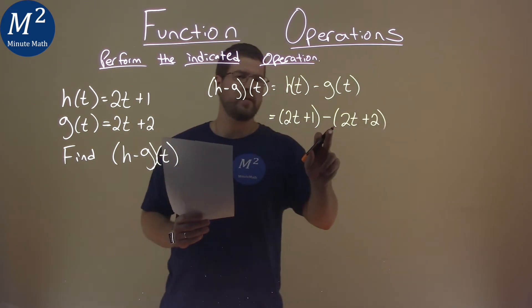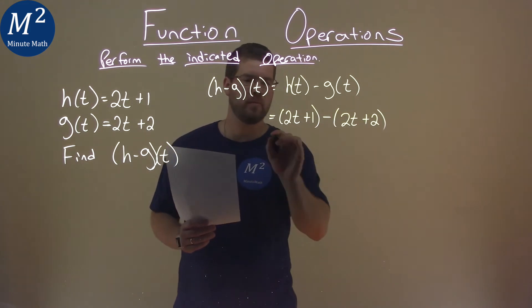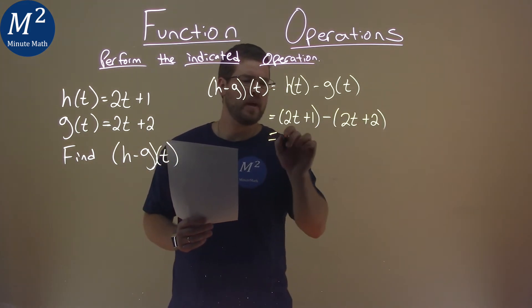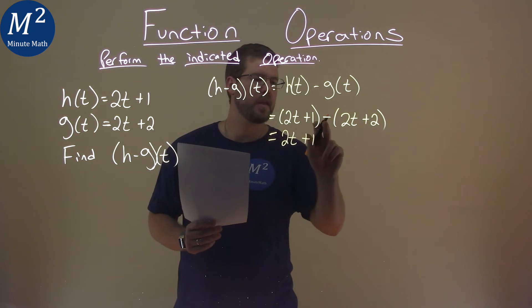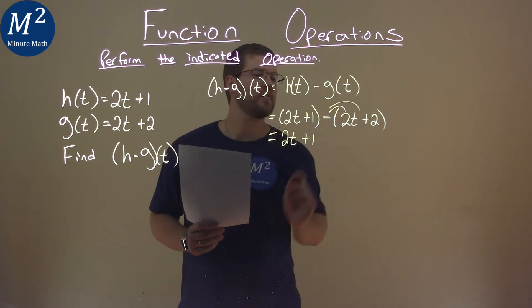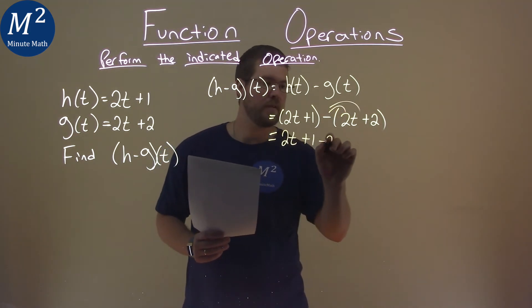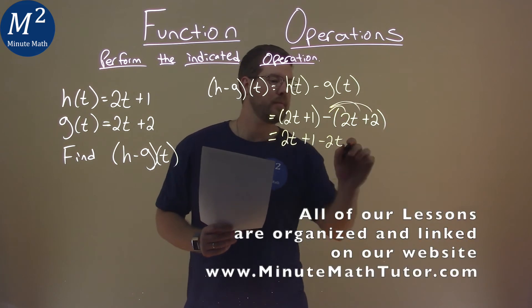Now, the point of the parentheses lets us know what g of t is, but that subtraction sign will be crucial. So bring this down, we have 2t plus 1, and the minus sign gets distributed to both parts, minus 2t, and then minus 2.